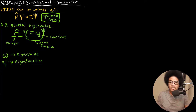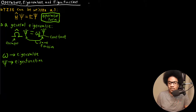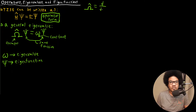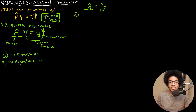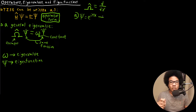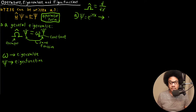Let's take a few functions and look at verifying if something is an eigenfunction of a given operator or not. For the operator, we'll take the first derivative operator in one dimension, and for a couple of cases we'll figure out if a certain function is an eigenfunction of this operator. For the first function, let's look at e to the ikx. To prove that this is an eigenfunction, we need to operate on it and see if we get the same function back again times some constant.